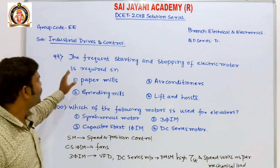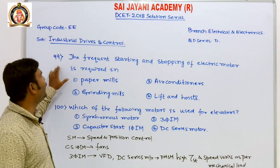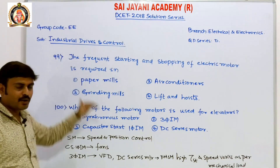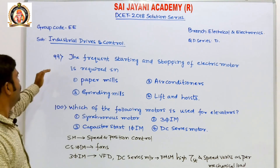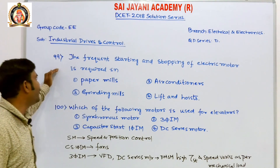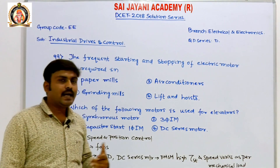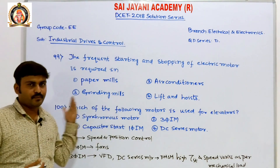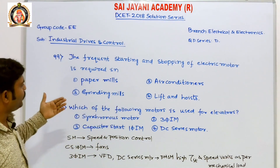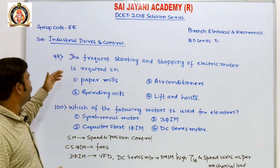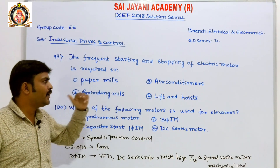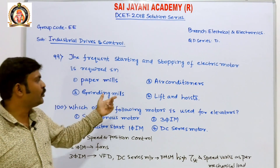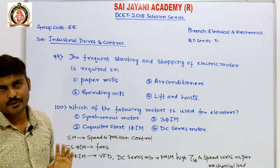Let us move to the next question, question number 99 on industrial drives and control. The question says: the frequent starting and stopping of electric motor is required in which application? First option, paper mills. Second option, air conditioners. Third option, grinding mills. Fourth option, lifts and hoists.